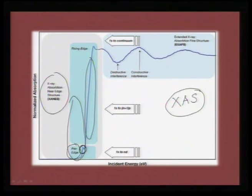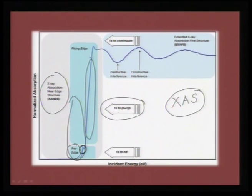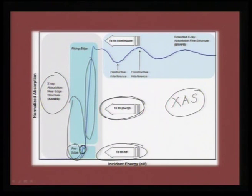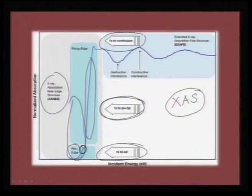This is the region where you have transitions happening between 1s to n+1 p level, or it could be p to n+1 d level. This region takes care of such bound states, and this is the region where you can talk about the pre-edge. If you are talking about a 1s electron knocked out into the continuum, or if the knocked-out electron is well within the continuum, then you will talk about the extended X-ray absorption fine structure - EXAFS. Several of these processes happen, and all are mapped under the same phenomenon of X-ray absorption spectroscopy.